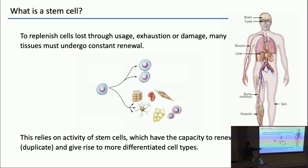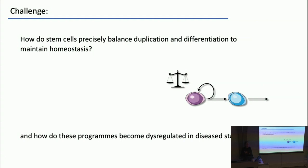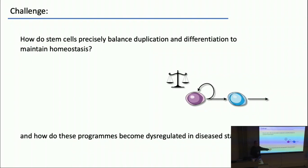This turnover relies on the activity of minority populations of renewing cells known as stem cells, which are very special because they have the capacity both to duplicate and to renew, but also to give rise to more differentiated progenies. One of the defining questions in stem cell biology is how do adult stem cells precisely regulate a perfect balance between duplication and differentiation to maintain homeostasis — and how do those programs become dysregulated in the transition to cancer?